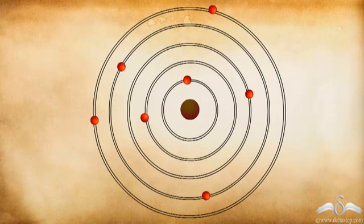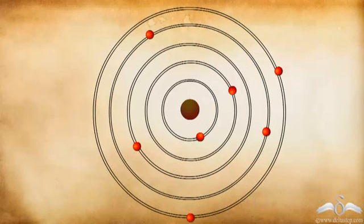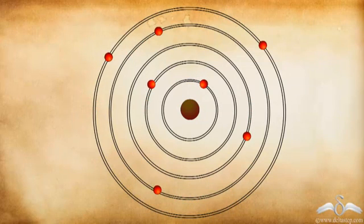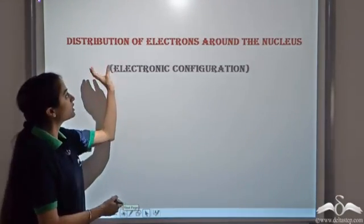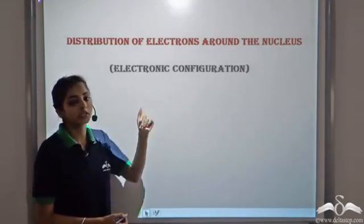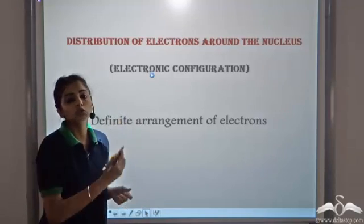This is the present accepted form of the structure of the atom, in which electrons revolve around the nucleus in fixed orbits or shells. Are these electrons distributed randomly? Can there be any number of electrons in any shell? No. There is a definite pattern — a definite distribution of electrons around the nucleus — which is known as the electronic configuration of the atom. It is a definite arrangement of electrons around the nucleus.